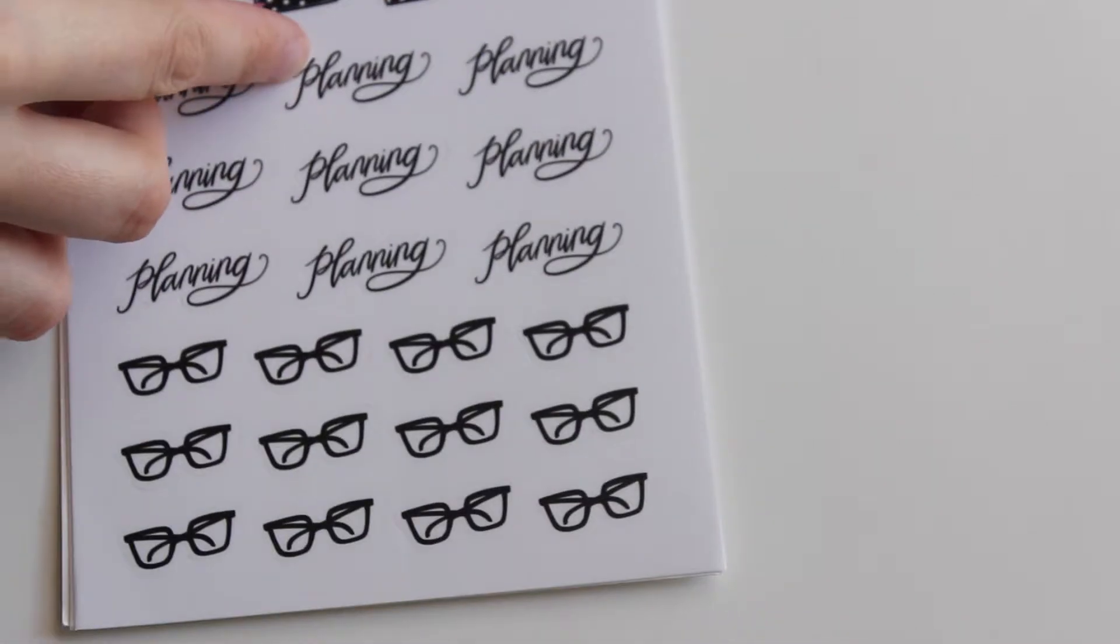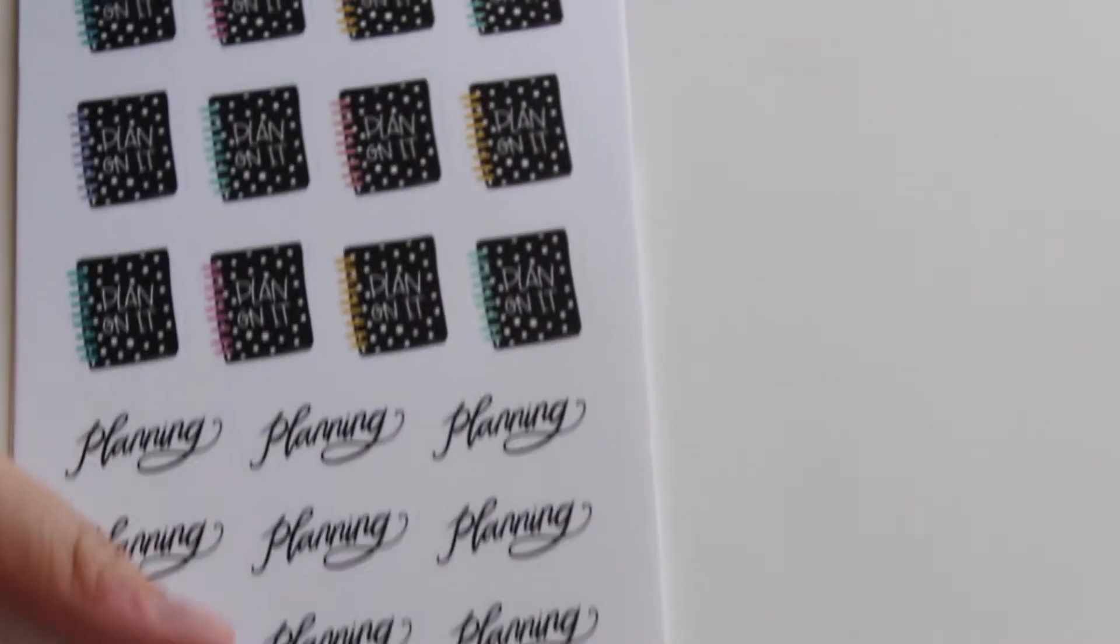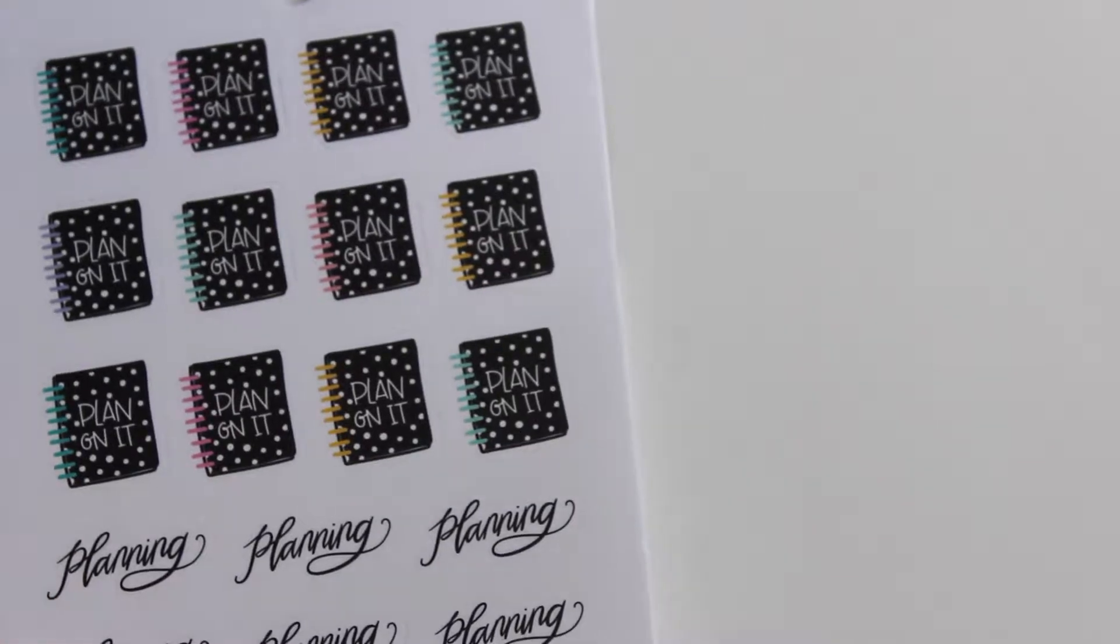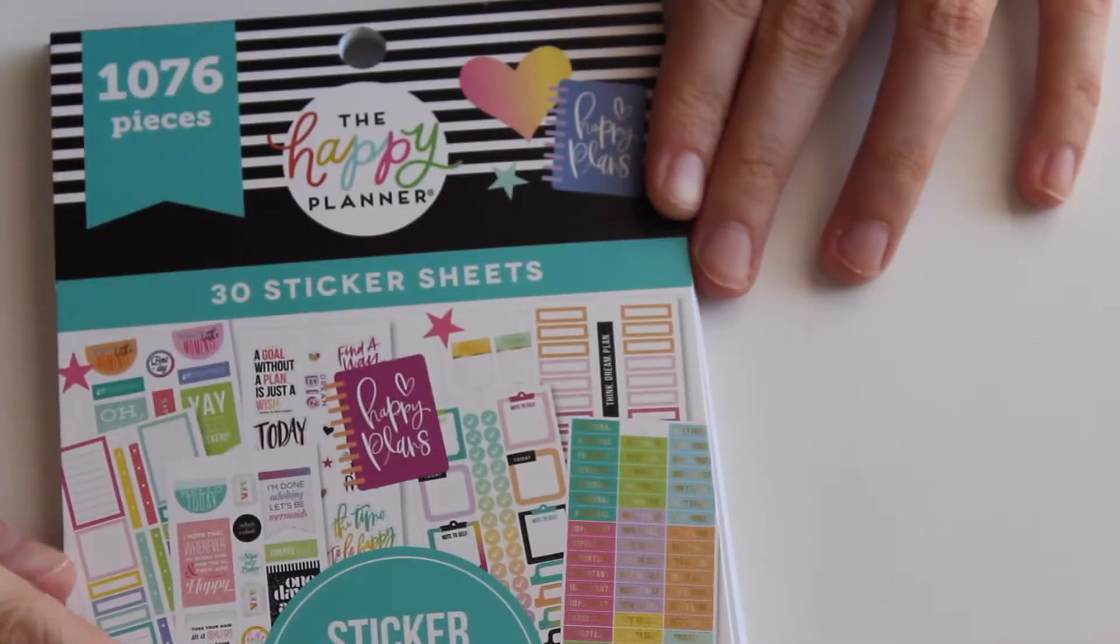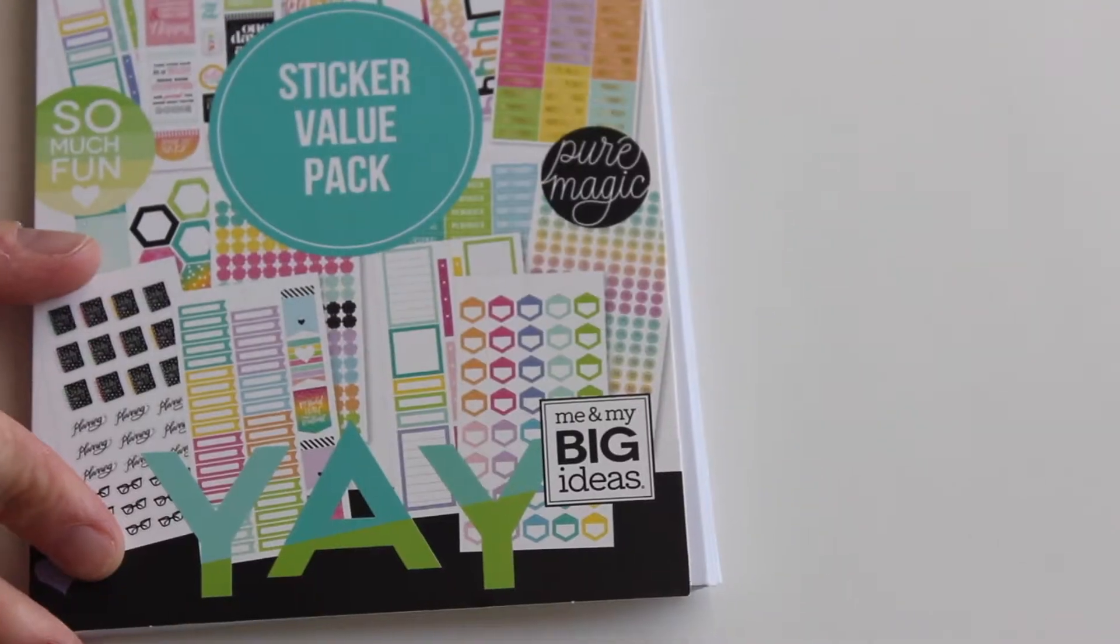And then planning, the glasses, and then it says plan on it. And that is it for the sticker book. So this again comes in the Joann's exclusive box.